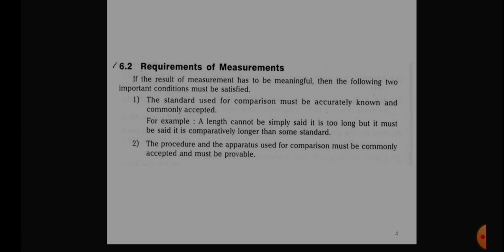Next, what is the requirement of the measurement? The requirements of the measurements are only two. The first one is the standard used for the comparison must be accurately known and commonly accepted. This is very important. When you say something is a standard, that standard must be accepted by everyone and it must be known clearly to everyone. What is this? Many examples you can say. When you say the length, the length cannot be simply said to be too long, but it must be said it is comparatively longer than some standard.